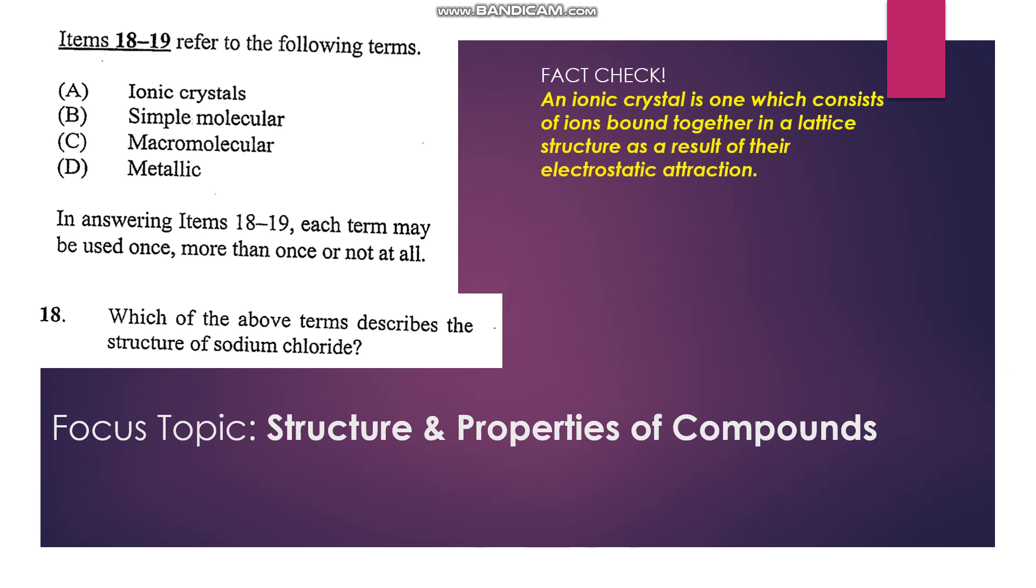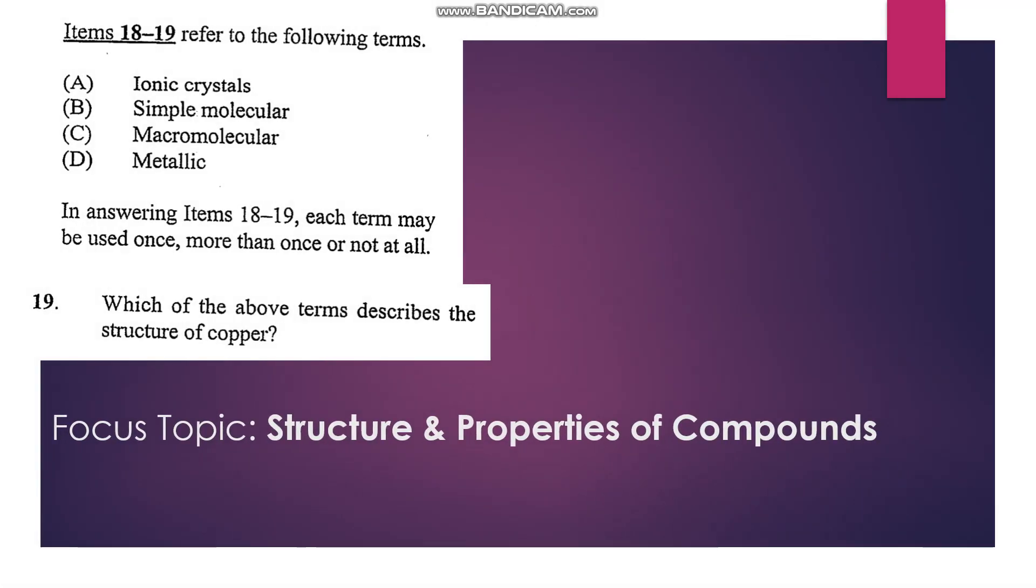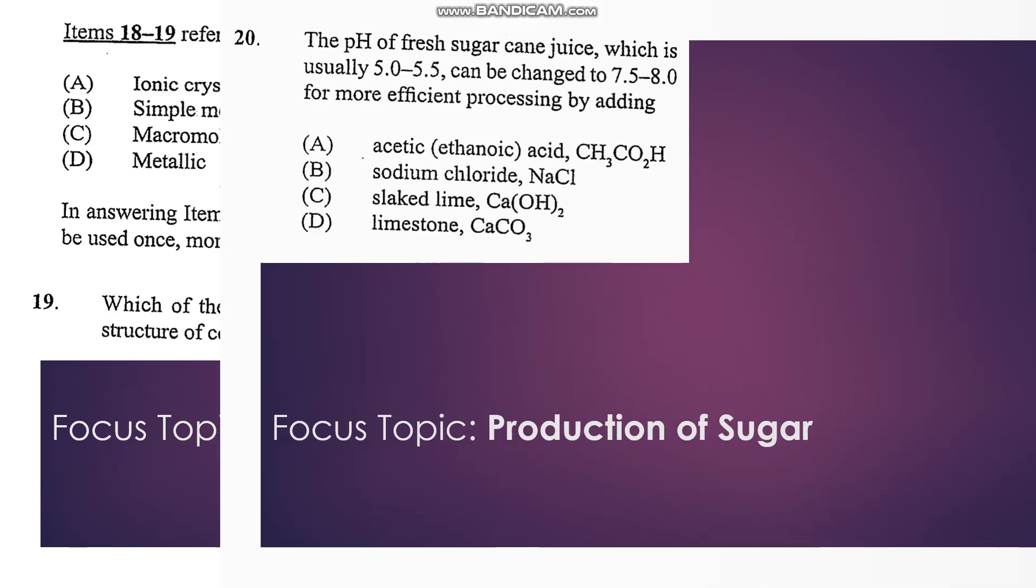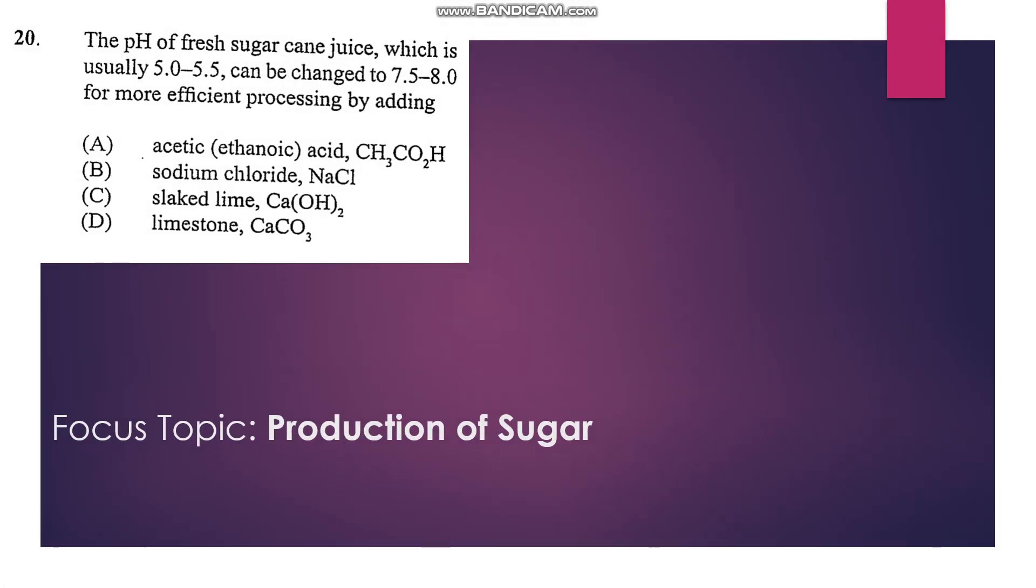Number 19: Which of the above terms describe the structure of copper? Copper is a metal, so it would have a metallic structure. So D is our answer.